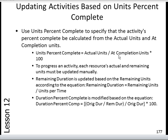At-completion units is equal to actual units plus remaining units. To progress an activity, each resource's actual and remaining units must be updated manually. Remaining duration is updated based on the remaining units using this formula: remaining units divided by units per time.